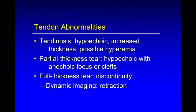Looking at tendon abnormalities, I tend to put this into three categories: tendinosis, partial thickness tear, and full thickness tear. For tendinosis, the tendon will be abnormally hypoechoic, usually increased in thickness, with possible hyperemia. Partial thickness tears, typically coexisting with tendinosis, will have the appearance of tendinosis with the added feature of an anechoic cleft or focus. A full thickness tendon tear is characterized by discontinuity, where dynamic imaging is helpful to show tendon retraction indicating a full thickness tear. Of note, tendinitis is not in the vocabulary here, because it has been shown in every tendon in the body that after about day 7 to 10 after an injury, the true inflammatory phase is gone. So by the time they come to imaging, there is no inflammation present. If there is hyperemia, this has been shown to represent neovascularity and not inflammation.